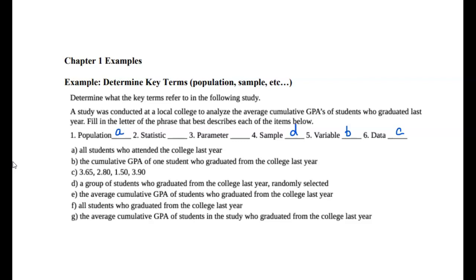Part E: the average cumulative GPA of students who graduated from college last year. This is an average — a calculation done with the raw data. If the calculation concerns your entire population, then this is a parameter. Parameter goes with population — P's go together.